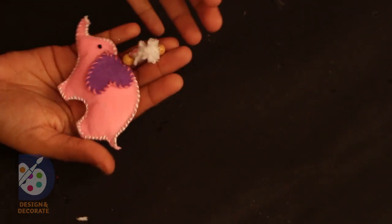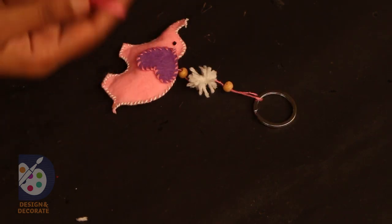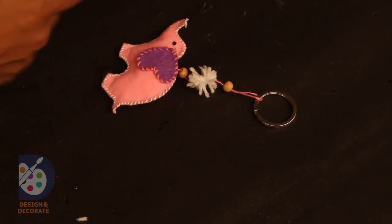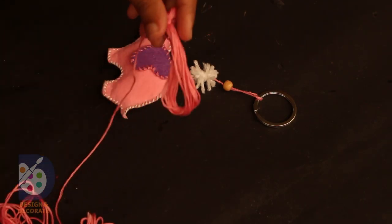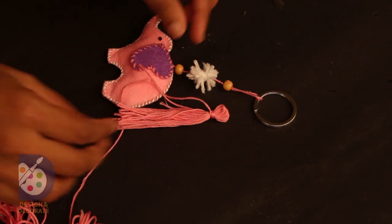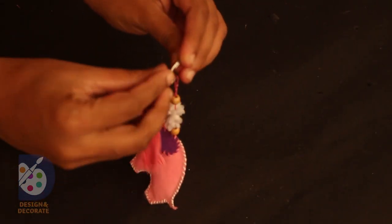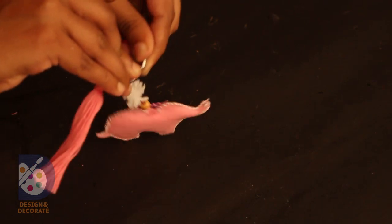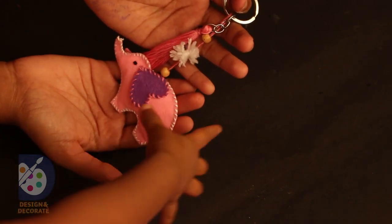It looks a bit simple, so I have added a tassel to give it a nice look. To make this, take the embroidery thread and roll it like this. Cut out on one side and on the other side tie it around. Place this inside the keychain loop as well. Now the beautiful cute keychain is ready.